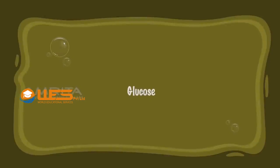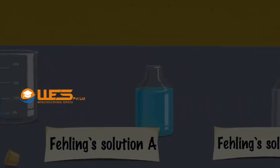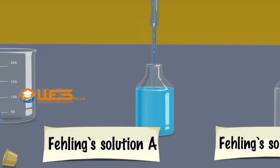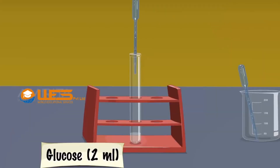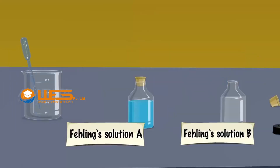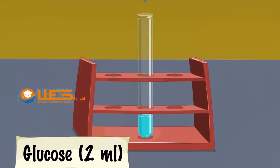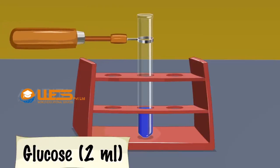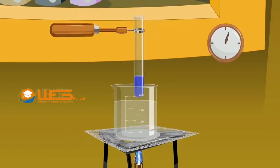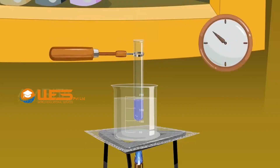Fehling's Test. Glucose. Take 2 ml of Fehling's solution A using a dropper. Add it to 2 ml aqueous solution of glucose taken in a test tube. Then add 2 ml of Fehling's solution B into the test tube. The solution turns a deep blue colour. Remove the test tube from the rack using a test tube holder. Place it in a boiling water bath and heat for a few minutes.